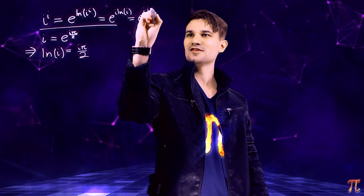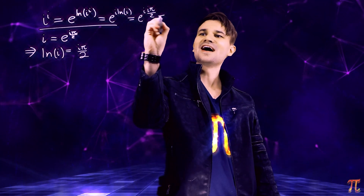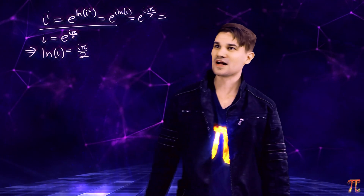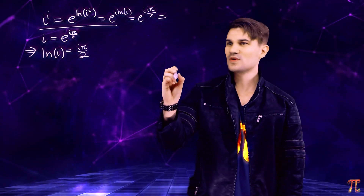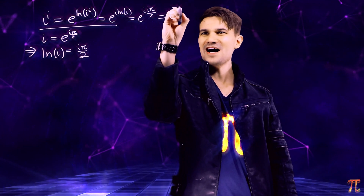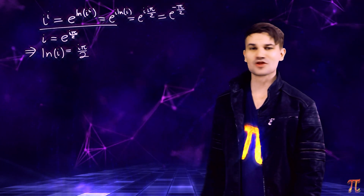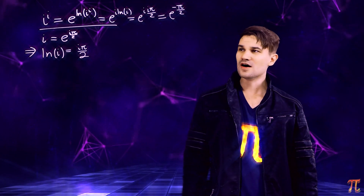So e to the i times the natural log of i can be written as e to the i times i pi over 2. And i times i is negative 1 — in fact, that's the only thing about i, really. And so we get e to the negative pi over 2 as the value of i to the power of i.